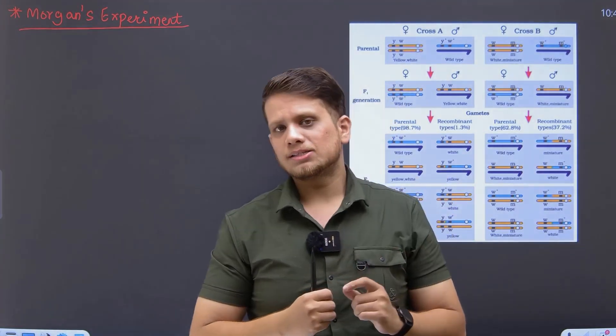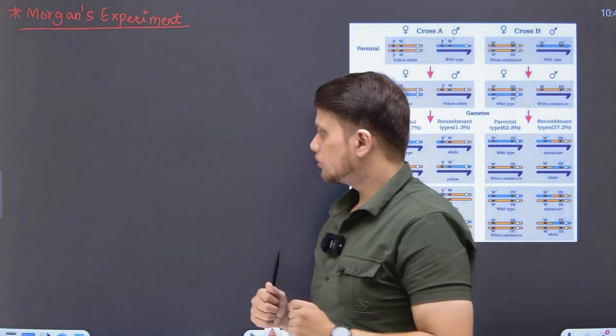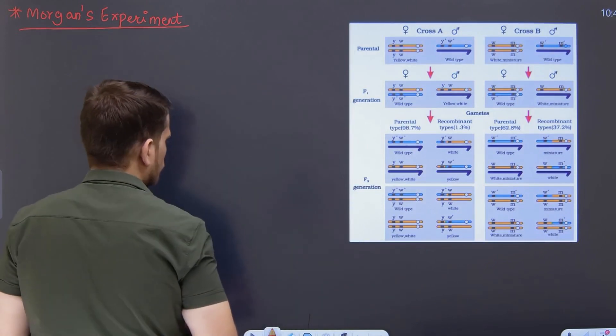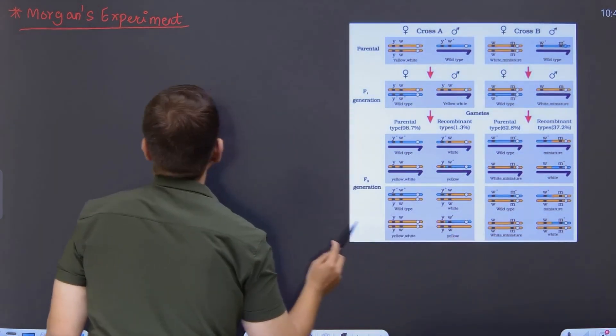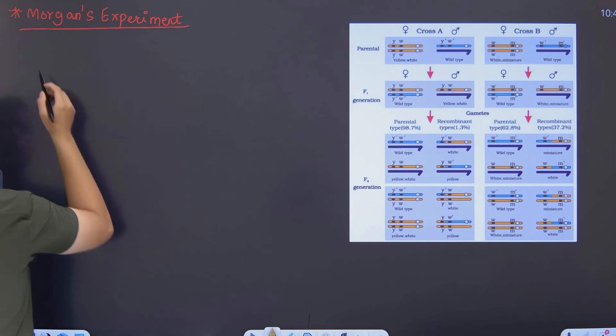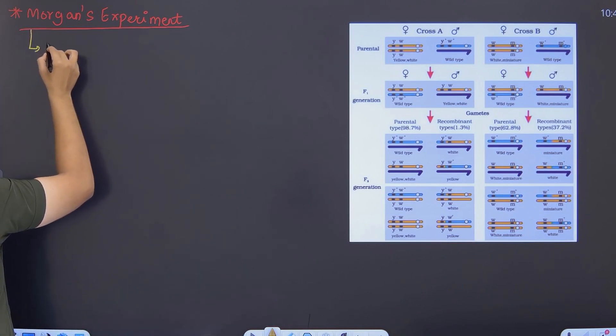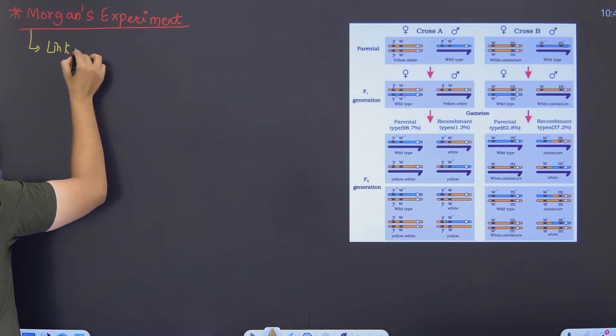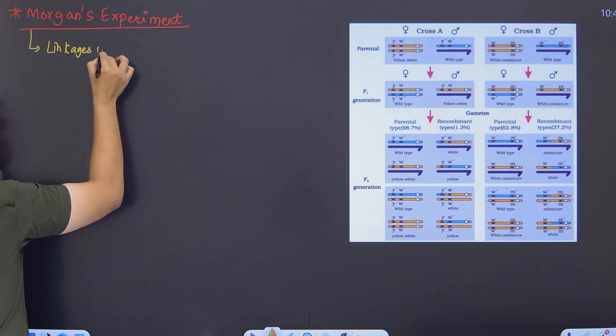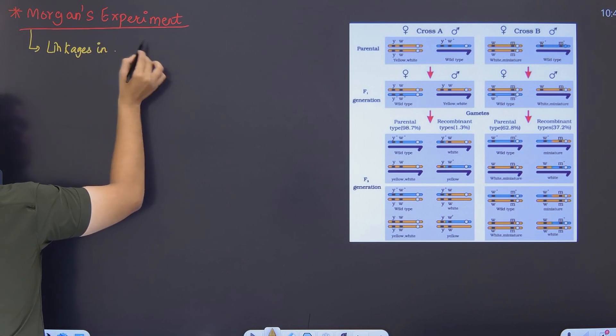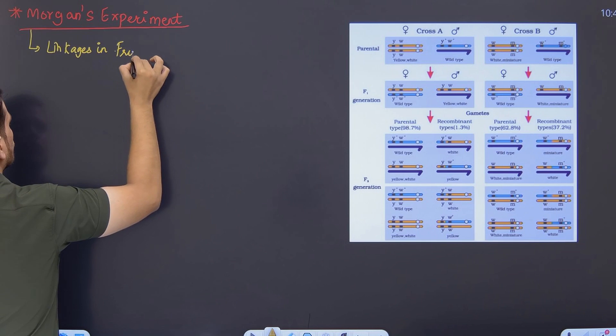One of the concepts which remains is nothing but Morgan's experiment on what is called Drosophila. Now students, Morgan was that person, Thomas Hunt Morgan was that person who carried out the experiments of linkages in case of fruit fly.